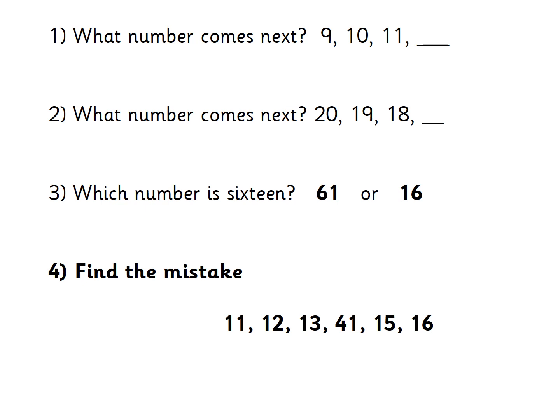Question number four: find the mistake. I'm going to say these numbers — you point to them and see if you can spot the mistake: 11, 12, 13, 14, 15, 16. The mistake you should have found is 14 — the numbers are the wrong way around. We start with the 1 first and then the 4.